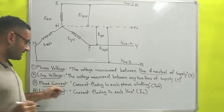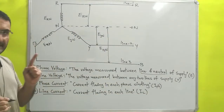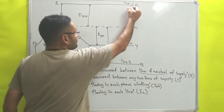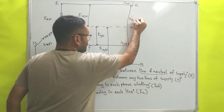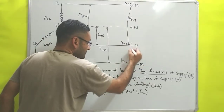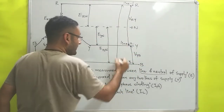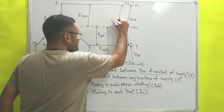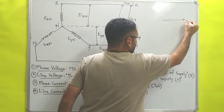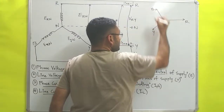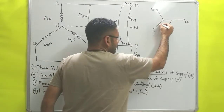Next is line voltage. Line voltage is the voltage measured between any two lines of supply, denoted by V. So between line 1 and line 2, that is R to Y, the line voltage is V-R-Y. Then between Y and B, it is V-Y-B. Then between B and R, it is V-B-R.